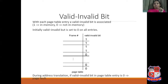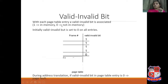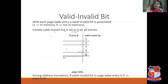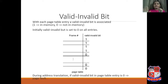Now let's understand the valid and invalid bit used in demand paging. With each page table entry for each process, we have a valid/invalid bit associated. A value of 1 means the page is in memory; 0 means the page is not available in memory. Initially, all valid/invalid bits are set to 0 because no page is loaded into memory at the start. When a page is required and brought into memory under demand paging, we set that bit to 1. This is an example of one particular page table.